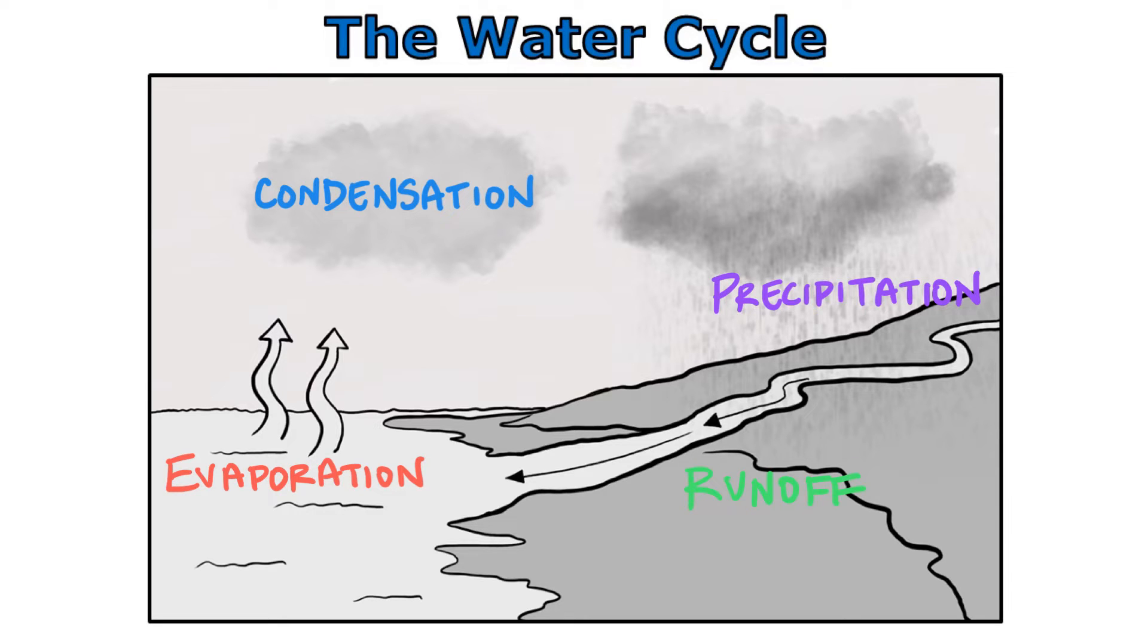And finally, water flows over land back into rivers, lakes, and streams in a process we call runoff. There it collects where it can evaporate again, continuing the water cycle.